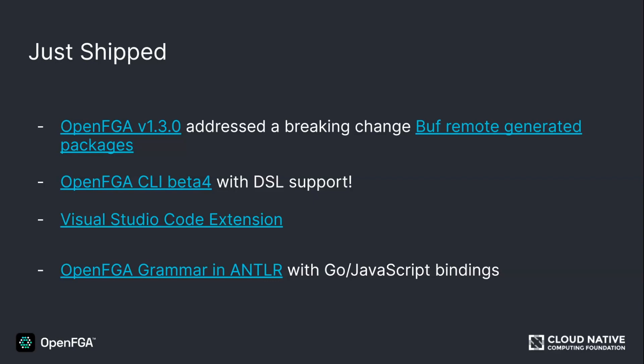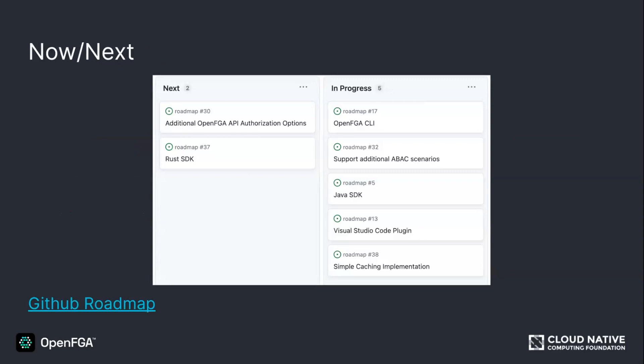We keep working on the CLI. In the last meeting we showed a few things on the roadmap — we're working on adding support for more ABAC scenarios. We have a design for that and know how to do it now with all the pieces and trade-offs. We're also working on the Java SDK, a plugin, and a simple caching implementation that Jonathan will demo, which will improve performance in some use cases. Next we'll work on more flexibility for defining authorization for who's calling the OpenFGA server, and also an SDK for the Rust language.